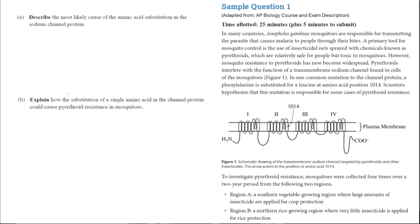To investigate the pyrethroid resistance, mosquitoes were collected four times over a two-year period from the following two regions. Region A is a southern vegetable-growing region where large amounts of insecticide are applied for crop protection. Region B is a northern rice-growing region where very little insecticide is applied for rice protection. There is more information provided in the next few questions, but for now, to answer the first two, all we needed was this intro.